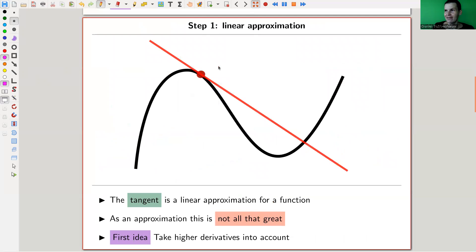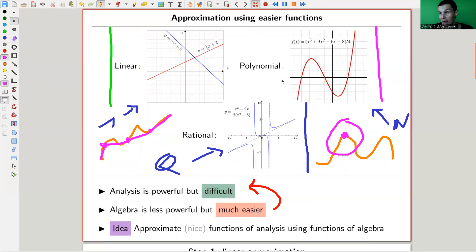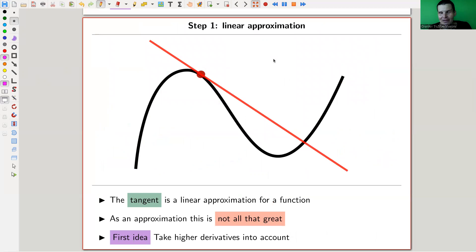Okay, and well, we just do a step-by-step linear, polynomial, and rational. Well, linear approximation, all of you know linear approximation, maybe not under that name. But it's essentially just a tangent at that point. So you take the derivative, compute the tangent. And it's a linear approximation.